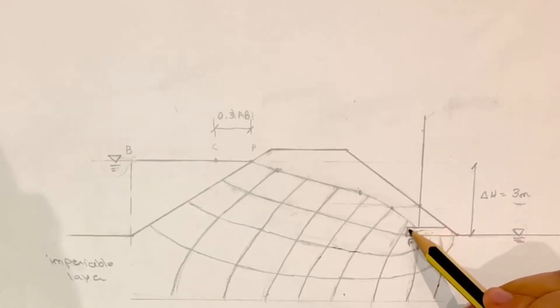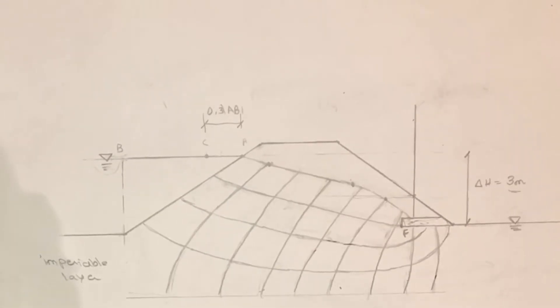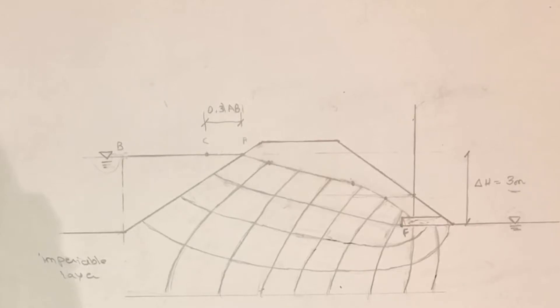We added a filter, which is very important because it draws the phreatic surface, which is the top line of the flow net, down and away from the downstream slope.